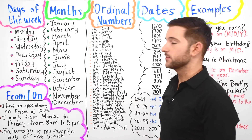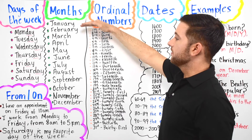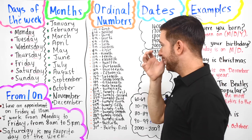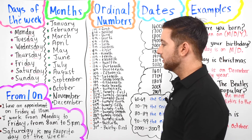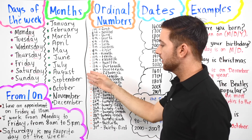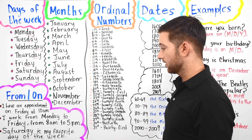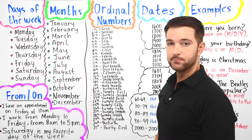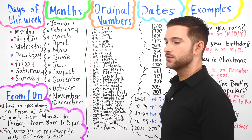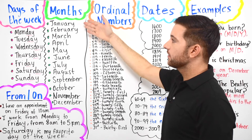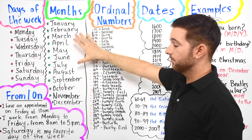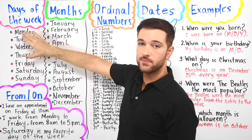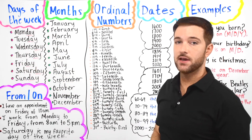I'll say them one more time: January, February, March, April, May, June, July, August, September, October, November, and December. Make sure to memorize these months, and also make sure to memorize the days of the week.